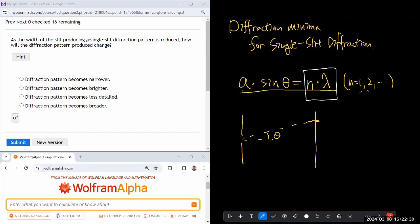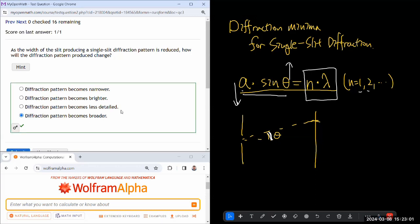So where it says the width of the slit is reduced, if the aperture size is going down, then theta must get larger for the given n to compensate, keep this product constant. And if this theta giving the diffraction minima is getting larger, that means the shape of the pattern is getting wider. So you could answer it that way: diffraction pattern becomes broader, and it'll be the right answer.